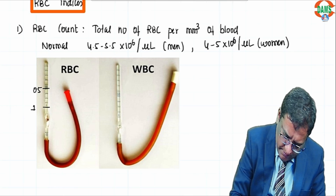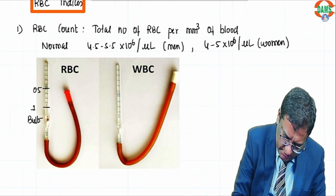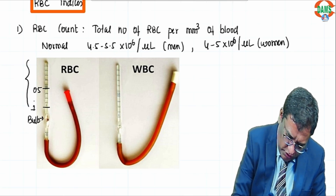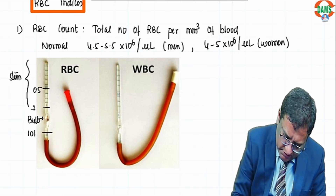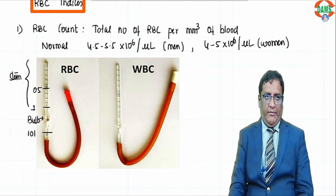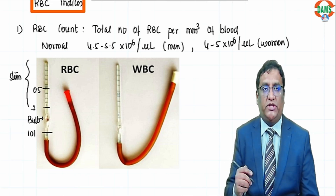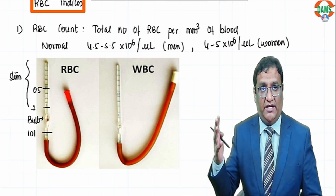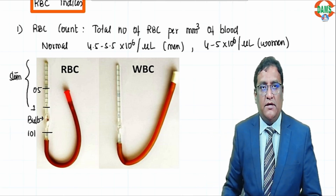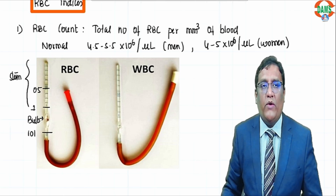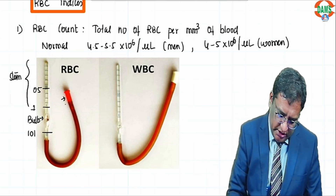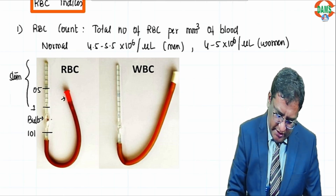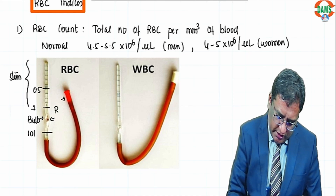This part is the bulb of the pipette, and this is the stem. The maximum marking is 101 for an RBC pipette. To identify it as an RBC pipette, the maximum marking will be 101, the mouthpiece is red in color, and the bead is also red in color — so it is red color-coded for the RBC pipette.